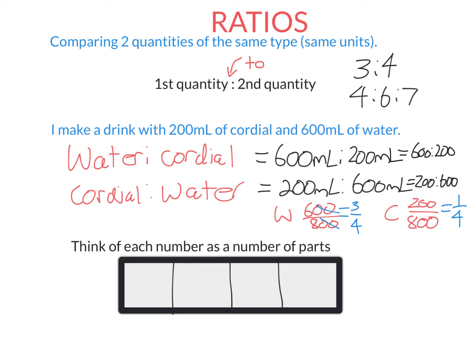Just as you can simplify fractions, so too you can simplify ratios. It turns out the water to cordial ratio, 600 and 200, I can divide each of these by 200, because 200 is the highest number that goes into both numbers in the ratio. So 600 divided by 200 is 3, 200 divided by 200 is 1. The ratio of water to cordial is 3 to 1. The ratio of cordial to water is 1 to 3.